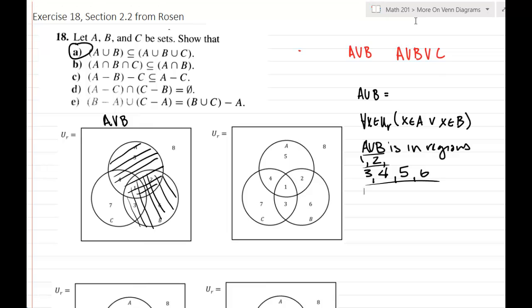So now let's do our other set, right? Because we're trying to compare A union B and A union B union C. Let's go ahead and do our other set here. I'll do it in a different color so we can compare. So I'll do it in green. Now I want to think about A union B union C.